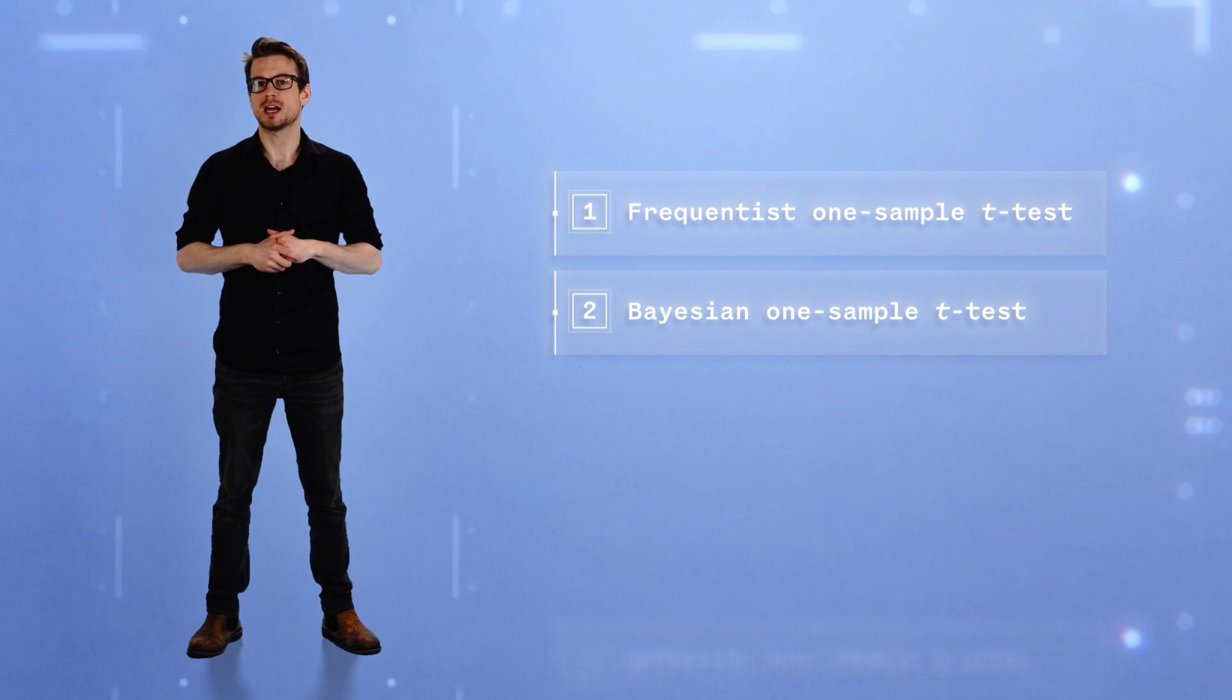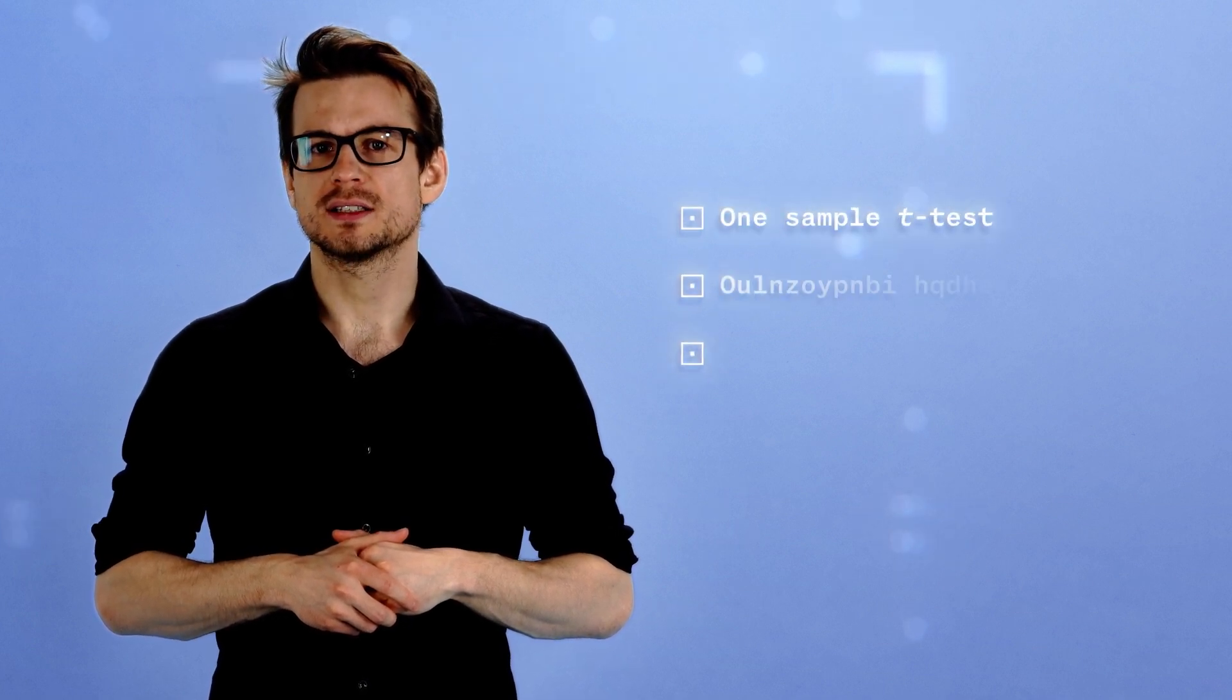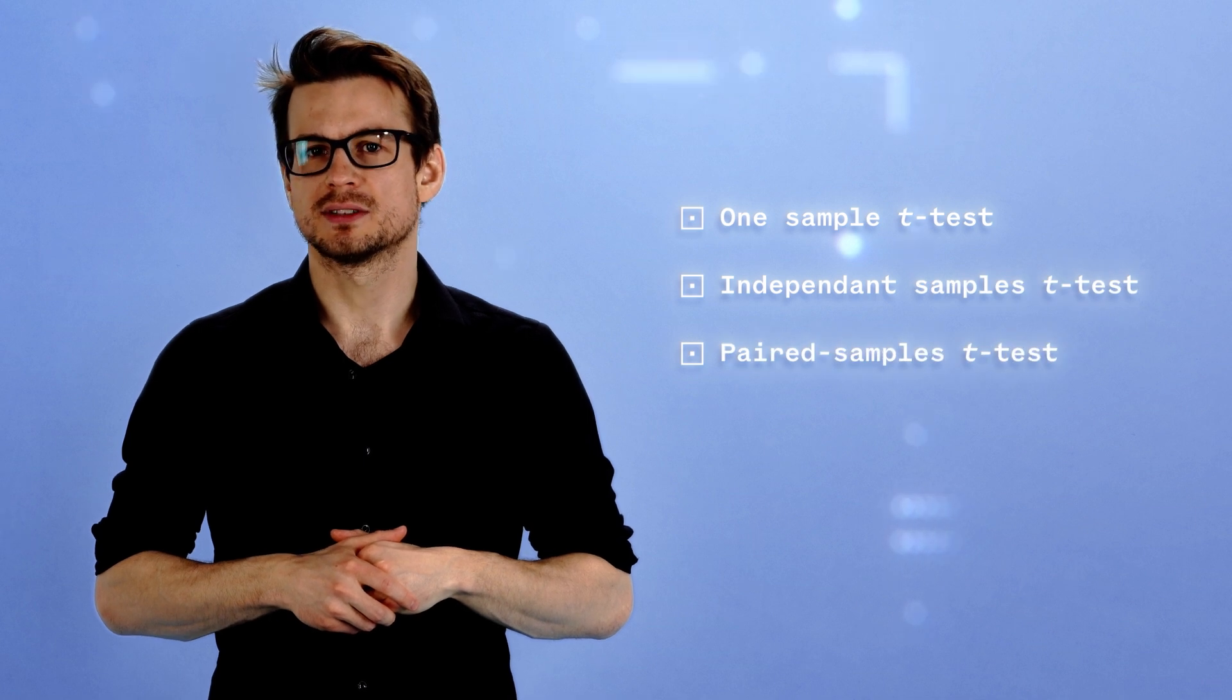Whether Bayesian or frequentist, t-tests are a family of tests that can be used for comparing means of normally distributed variables between groups of observations or to test them against a reference value. The term frequentist refers to the usual approach taught in statistics courses that relies on the use of p-values. We distinguish between three types of t-tests. For now, we focus on the one-sample t-test and discuss the independent samples and paired samples versions later. Keep in mind that the idea is virtually the same for any of the three.